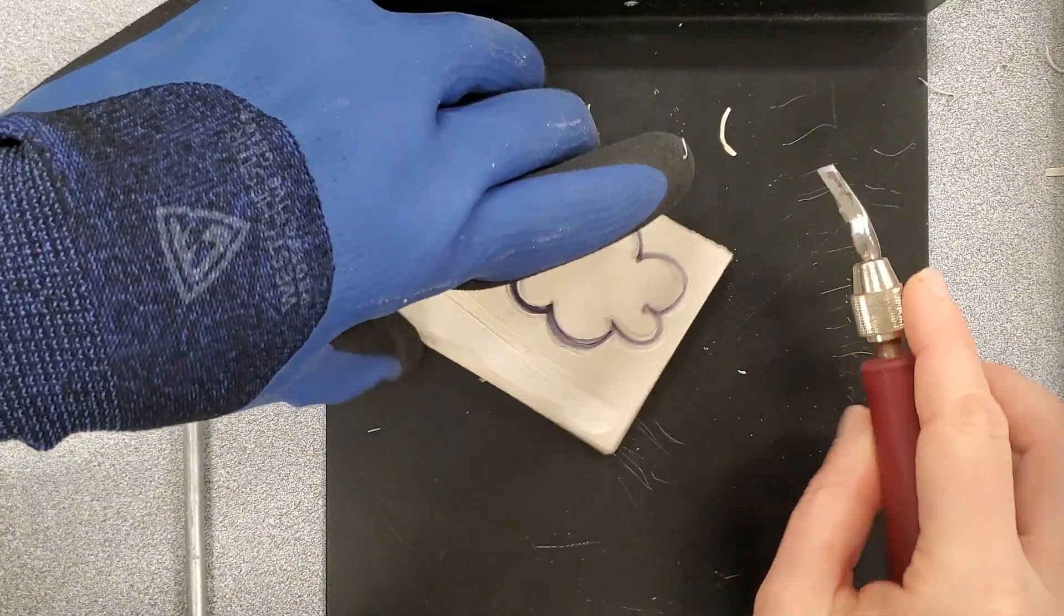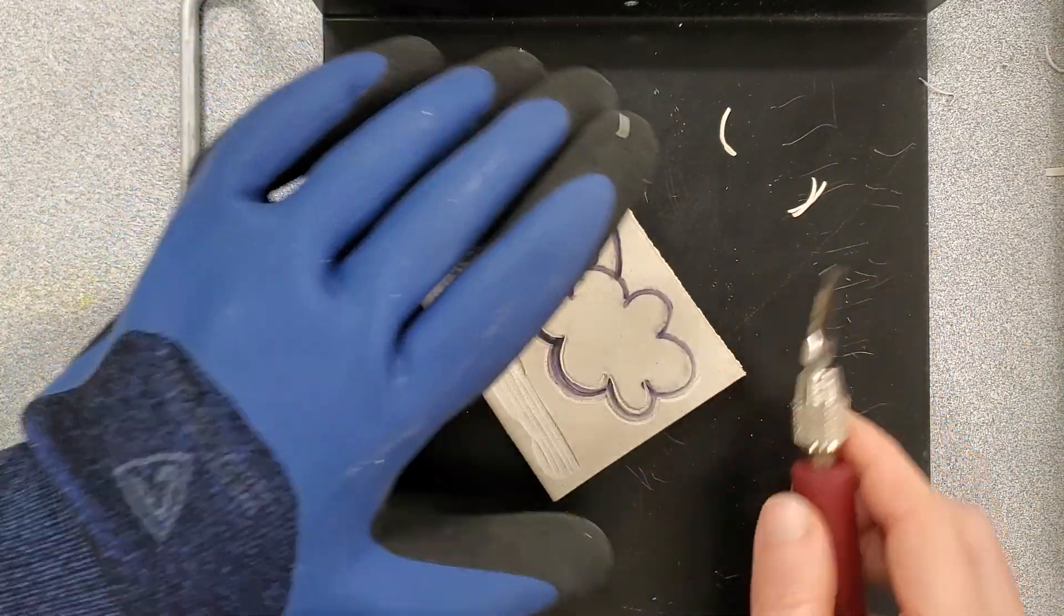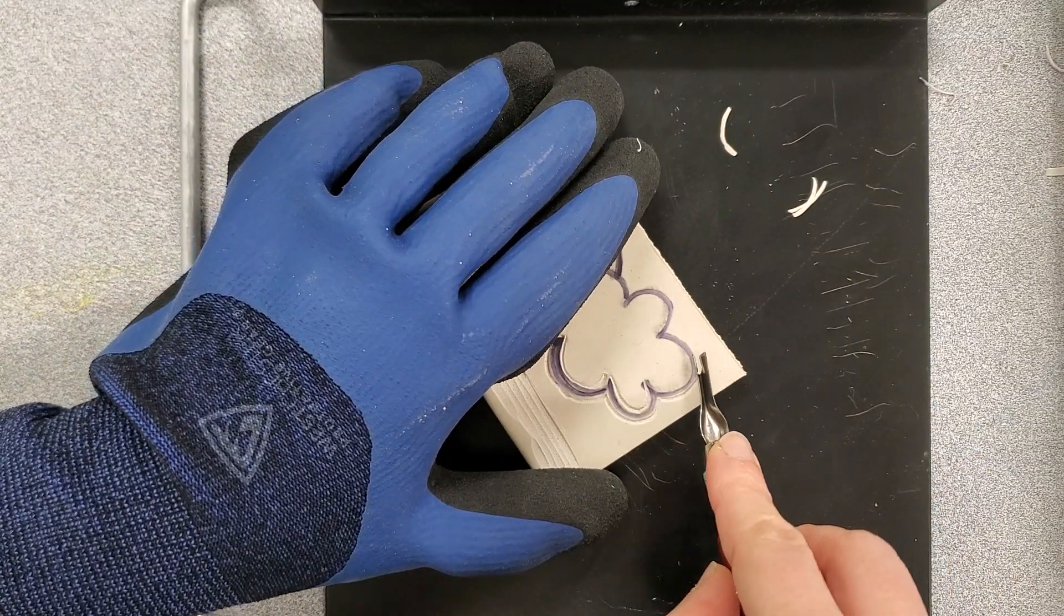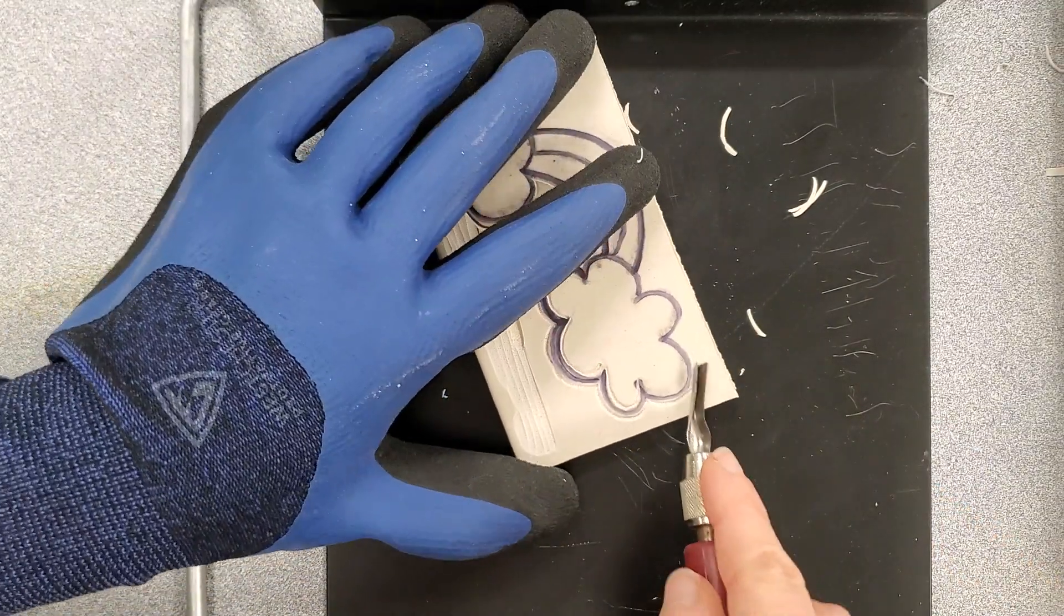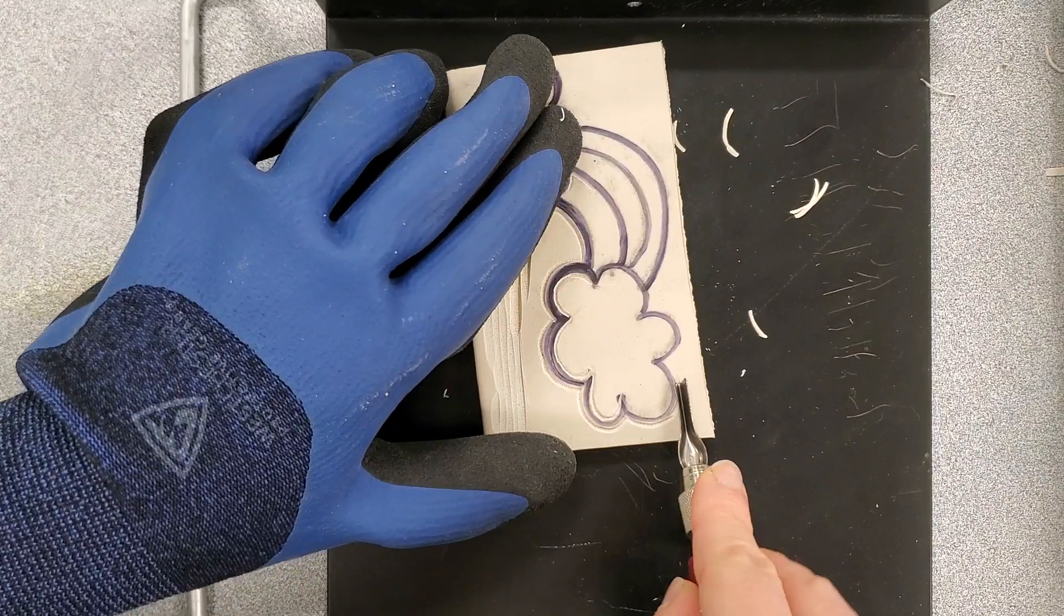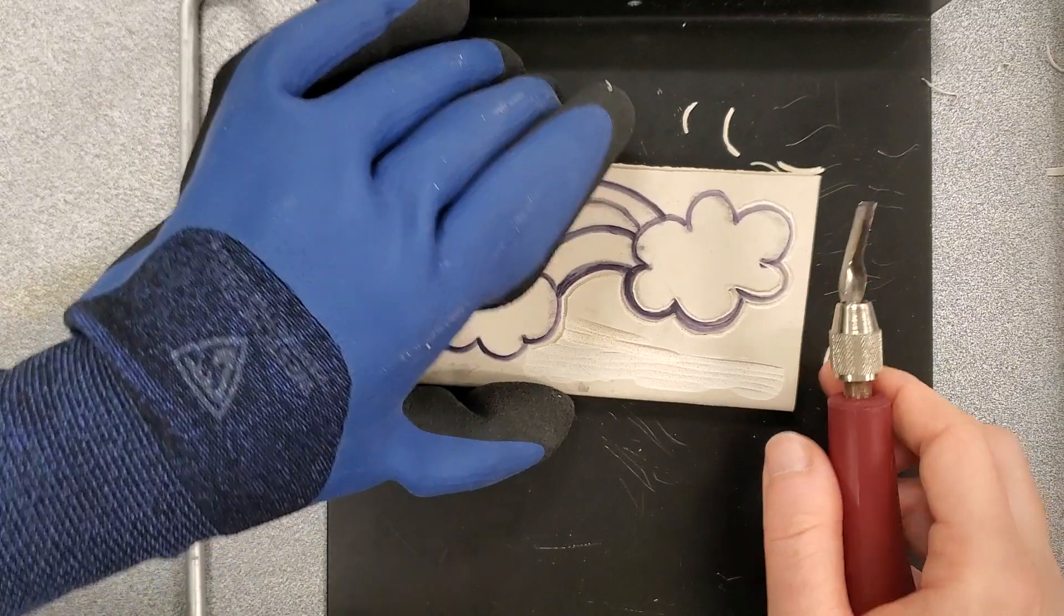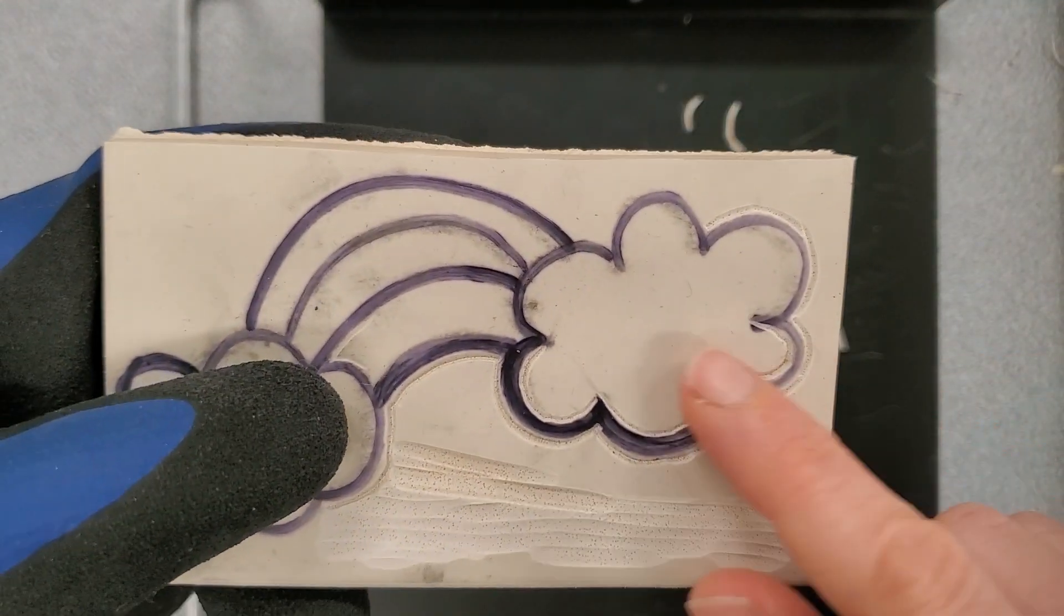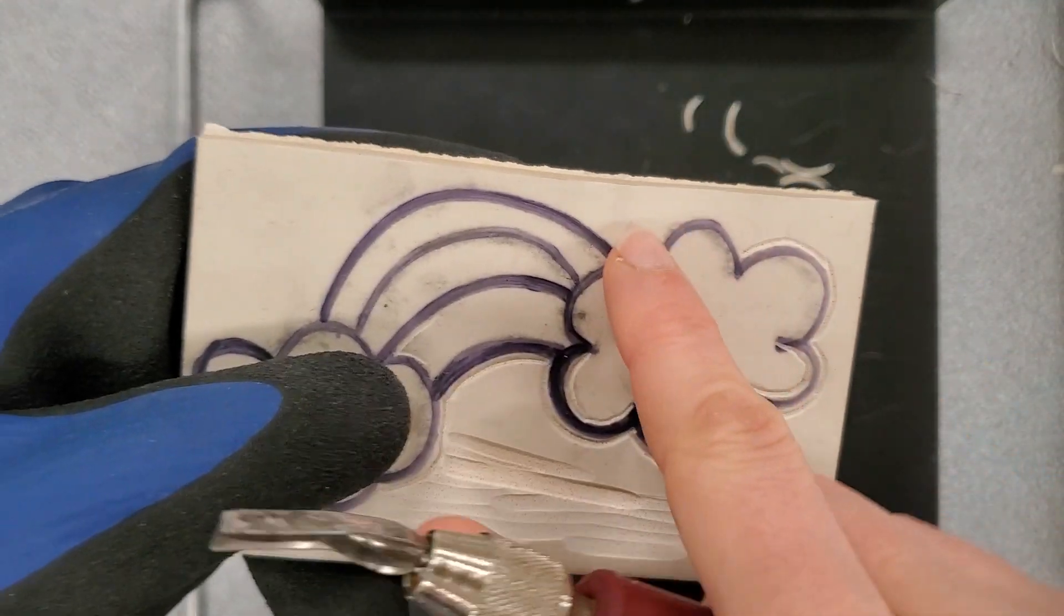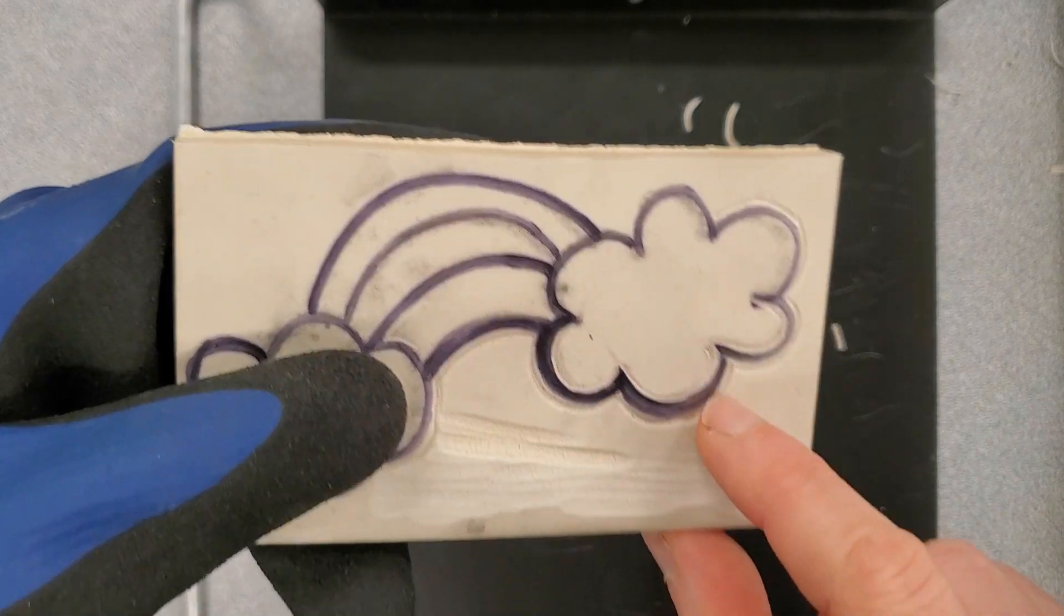The goal with that is to always be carving away from yourself. So if I come around to correct you, it is not personal. Just want to make sure that I keep everybody safe. So I'm carving this line on the outside of my black line, all the way around.